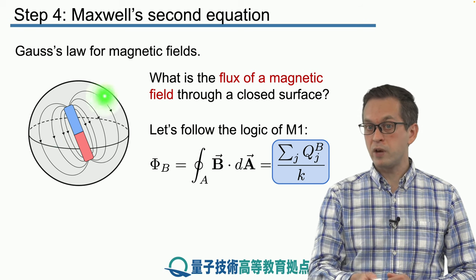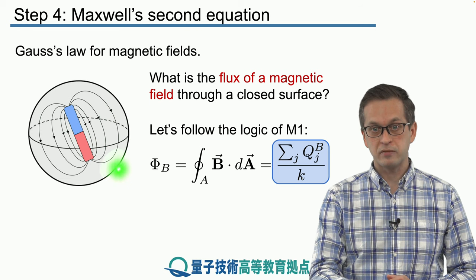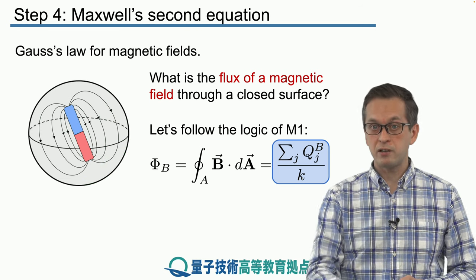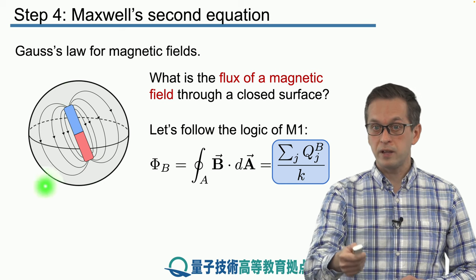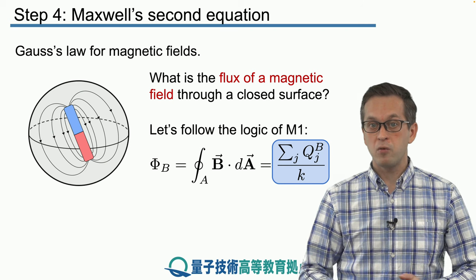So now we have a source of a magnetic field inside the surface that also goes through the surface. So there is definitely flux going through this area. The question now is if we integrate this flux over the entire surface, what happens?